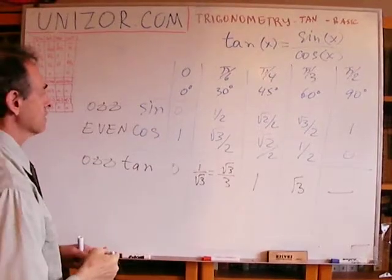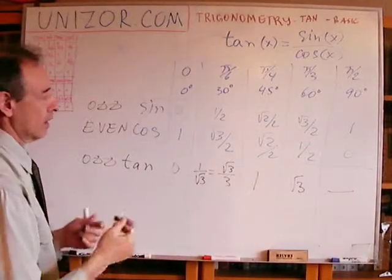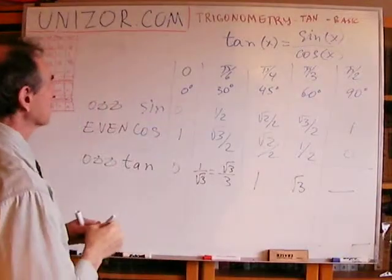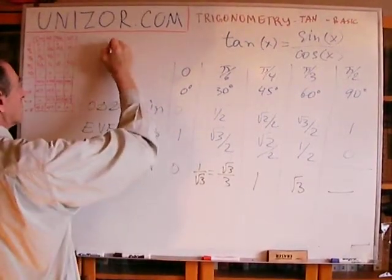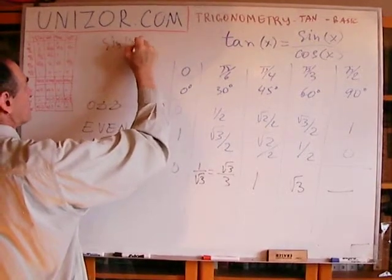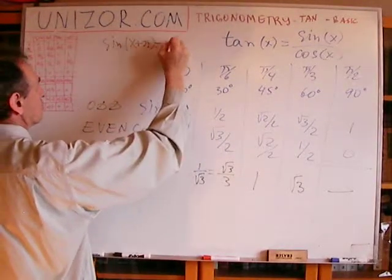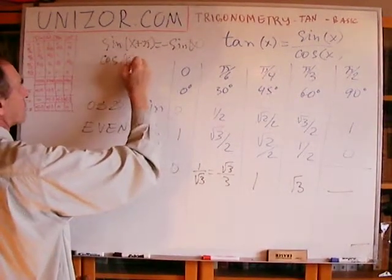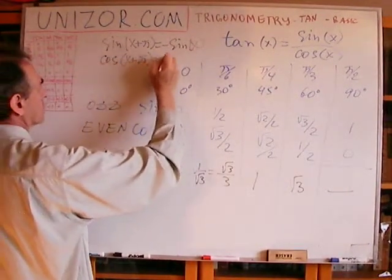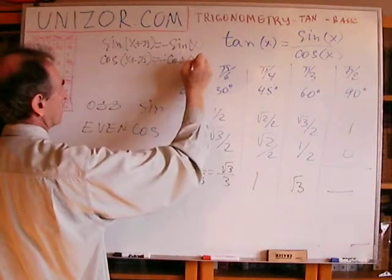Now, if you want something else, you do have to remember a couple of formulas for sine and cosine related to adding pi. Sine of x plus pi is equal to minus sine of x, and cosine of x plus pi equals minus cosine of x.